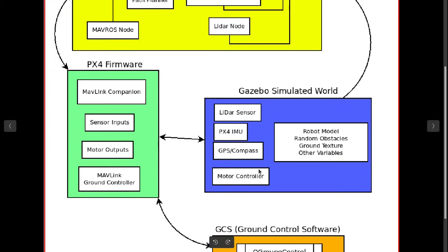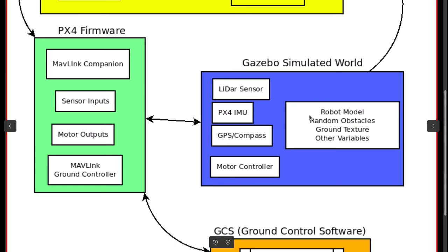Let's start with the Gazebo simulated world, which will be the replacement for our physical drone. Just like a real drone, we can have things like sensors and motor controllers. We can have a robot model as the visual representation of our drone, random obstacles or obstacles of our choice, ground texture, and other variables. Gazebo is a very advanced simulation software for our drone.